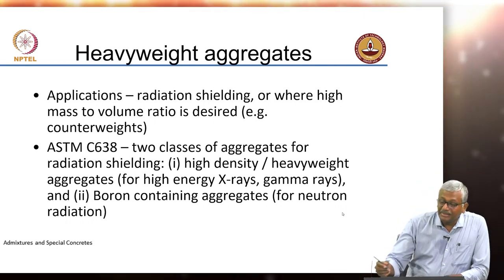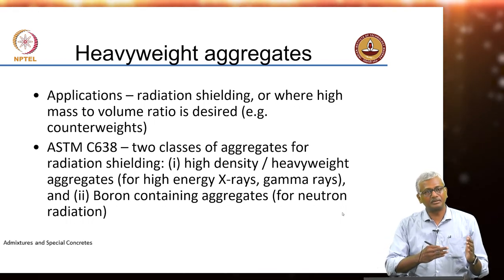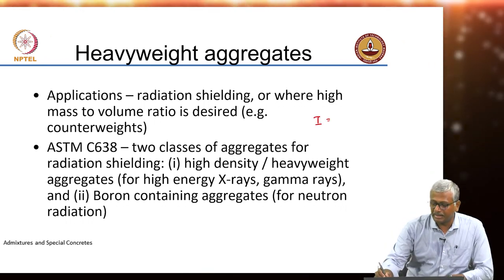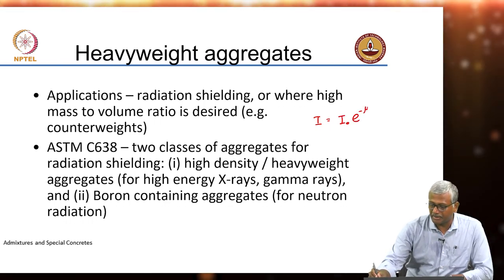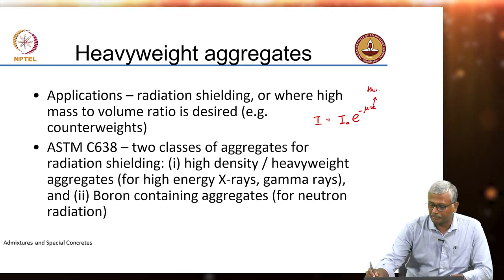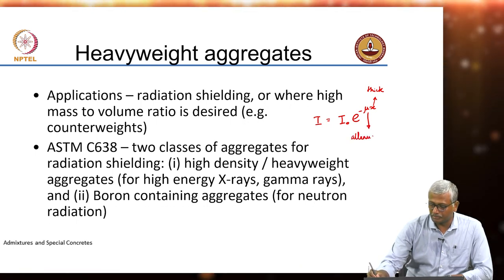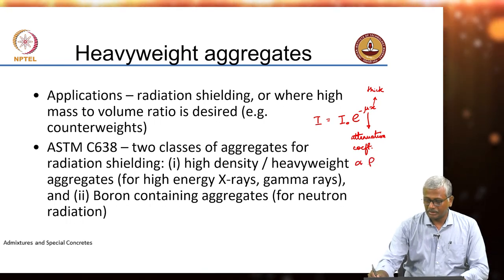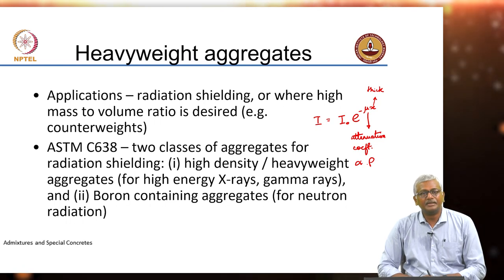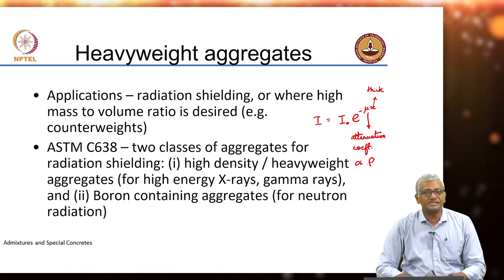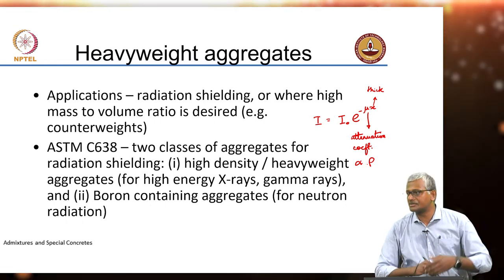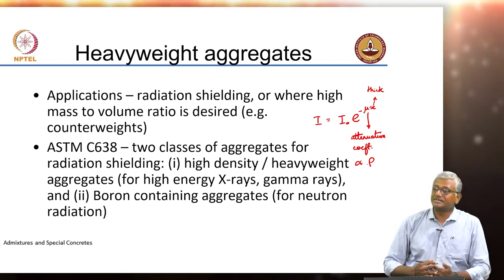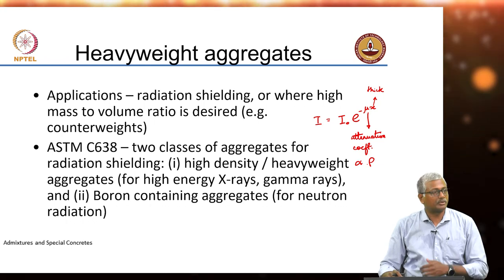To stop this high energy radiation you need a proper high density material. The intensity of electromagnetic radiation as it passes through a dense material attenuates with respect to the thickness of the material. Generally, the intensity at any given point I equals the original intensity I₀ multiplied by e to the power negative μx, where x is the thickness and μ is the attenuation coefficient. This attenuation coefficient is dependent on density — the higher the density, the greater the attenuation coefficient, and the greater the decrease in intensity. High density aggregate is used to make heavyweight concrete with densities typically much more than 3 g/cm³ or 3000 kg/m³.